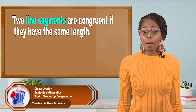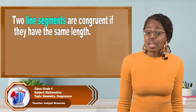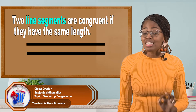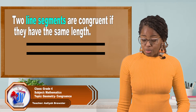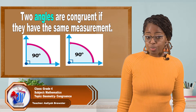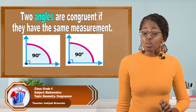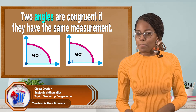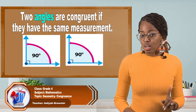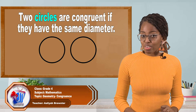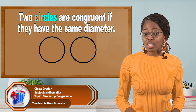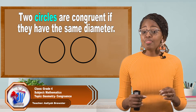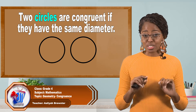For example, two line segments are congruent if they have the same length. Also, two angles are congruent if they have the same measurement. Another example: two circles are said to be congruent if they have the same diameter.